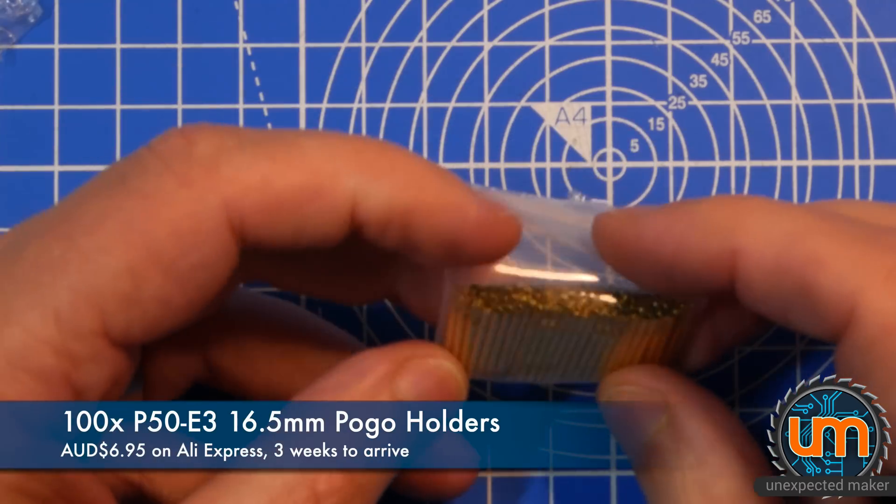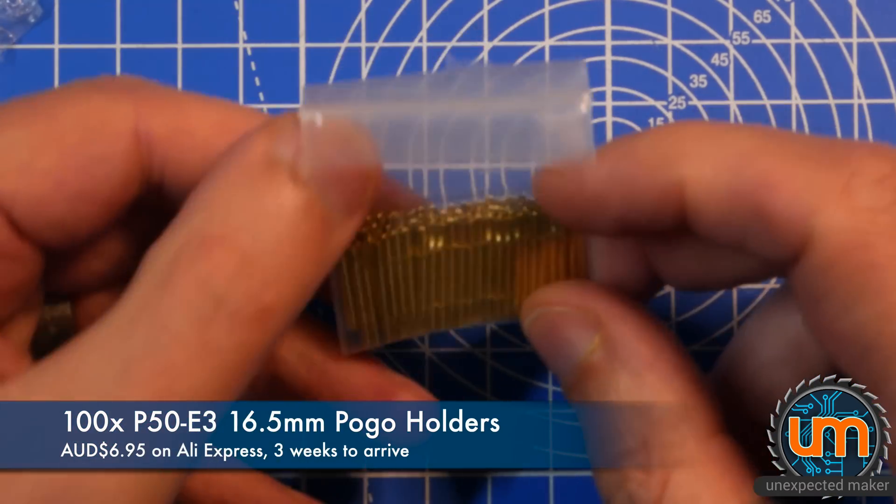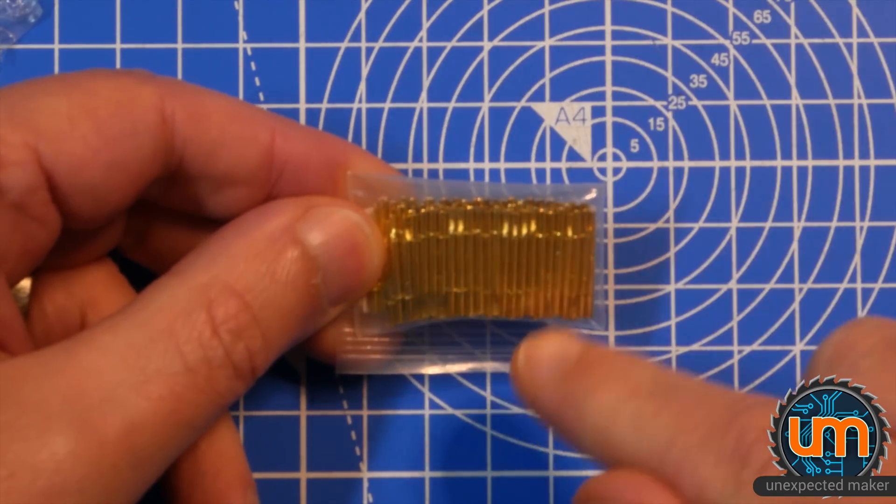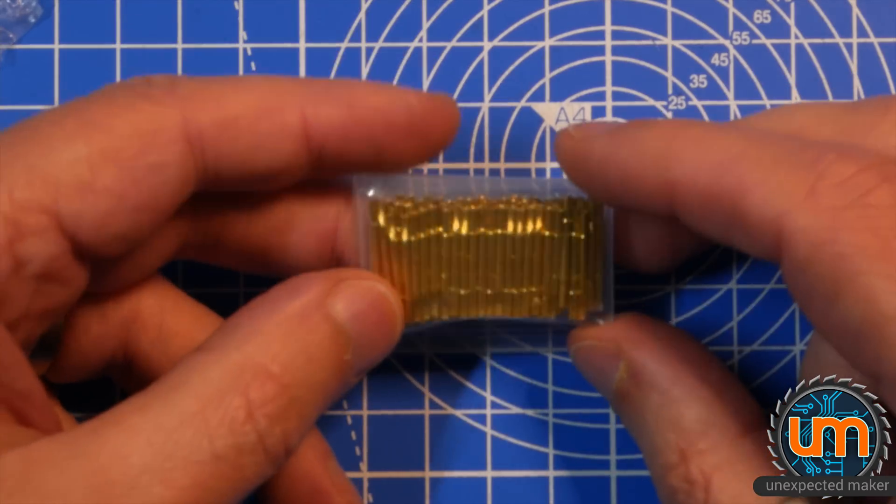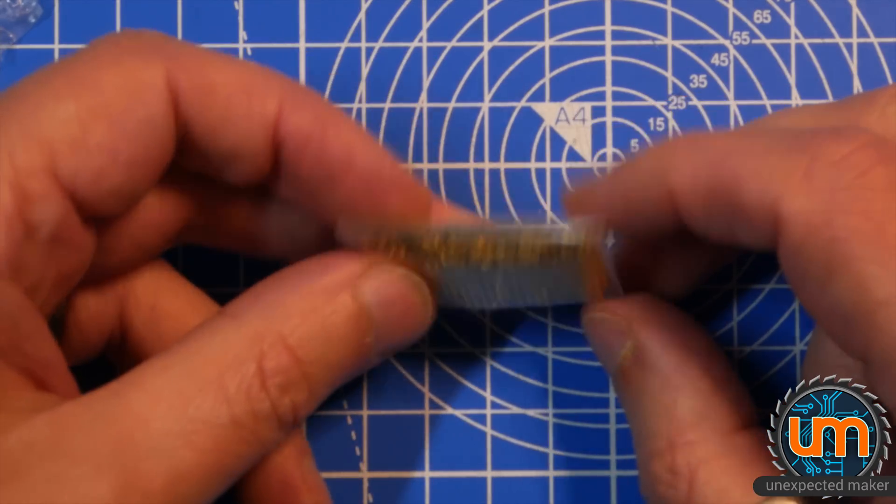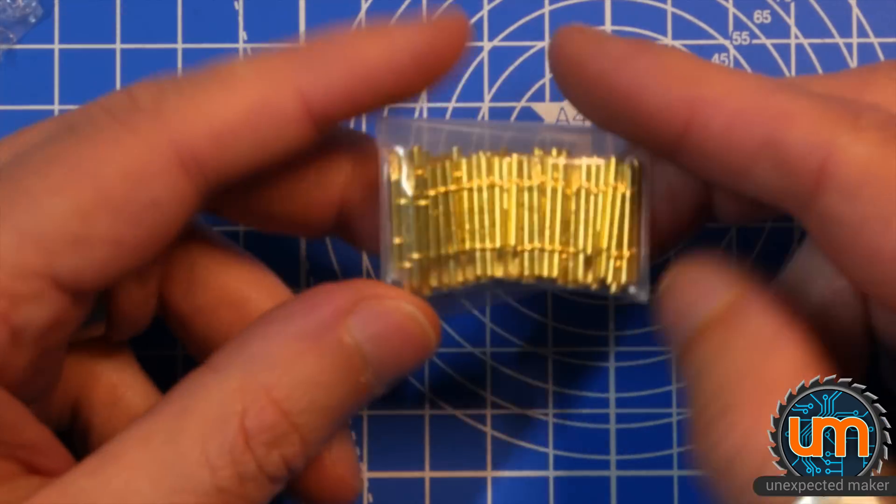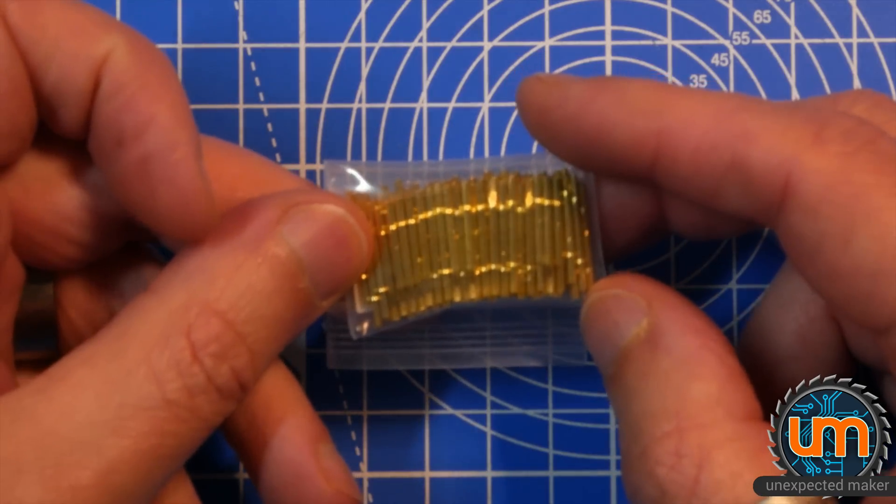Let's get closer. These are actually holders. So you can see they're hollow on the top and they're hollow on the bottom. The idea is you put these inside the PCB and then you put the pogo pins inside these so the pogo pins become removable in case they wear out or break. So I'm going to potentially use these on my test jigs. I don't even know if they're going to fit inside the holes on my PCB. We'll find out soon.